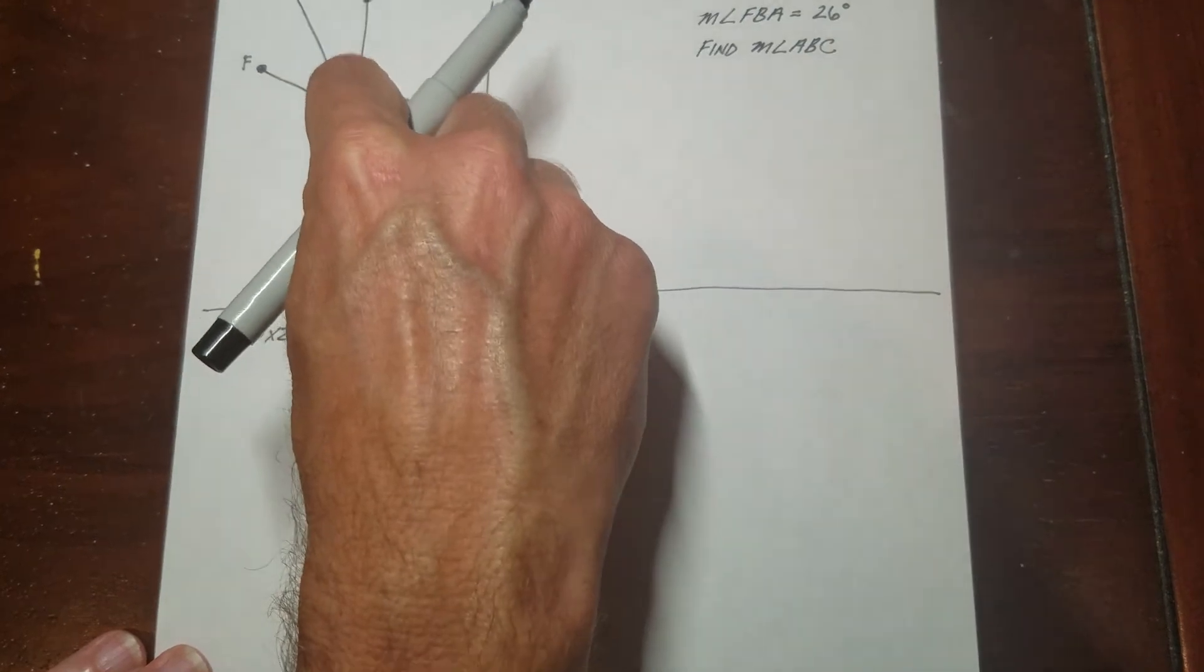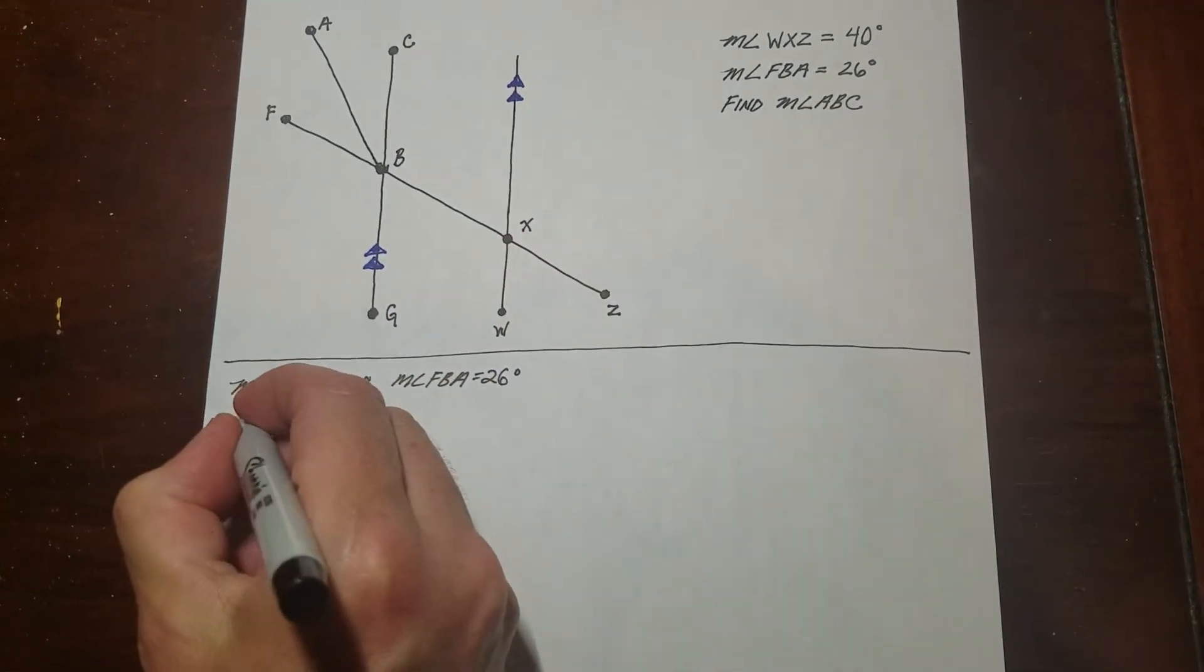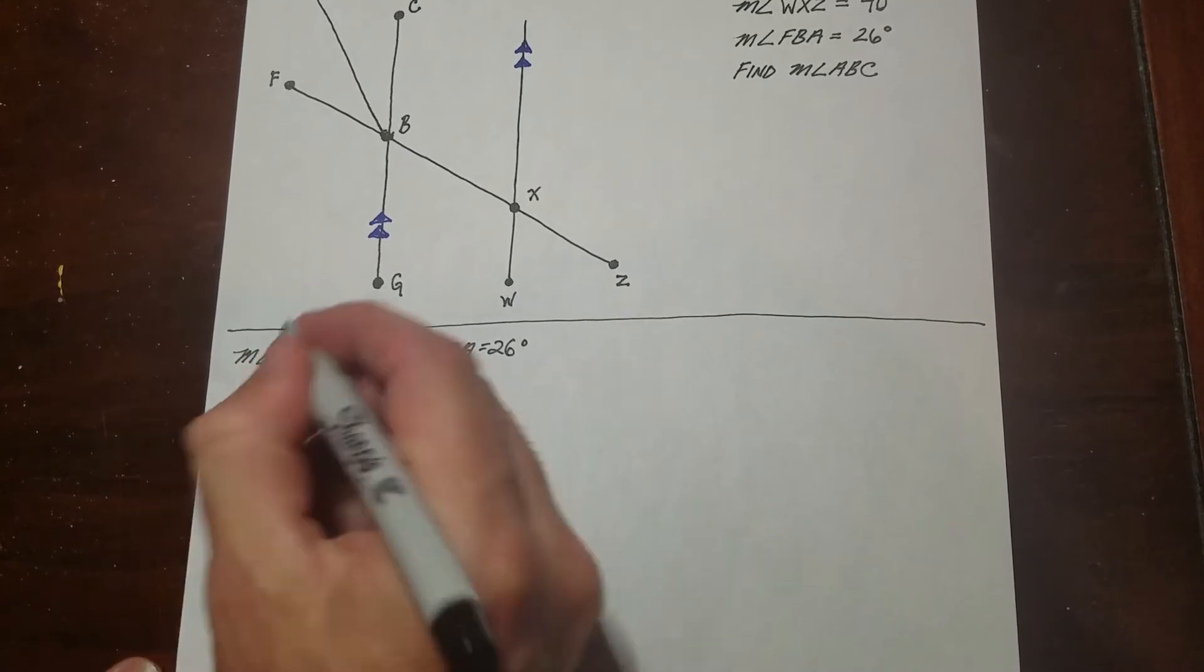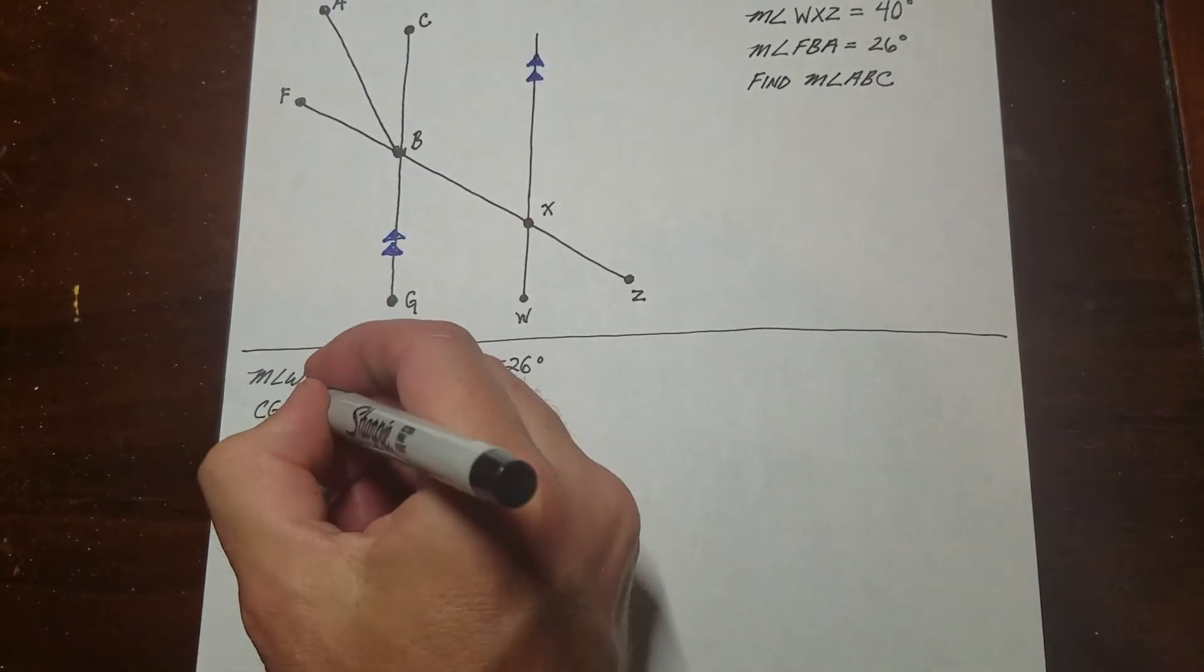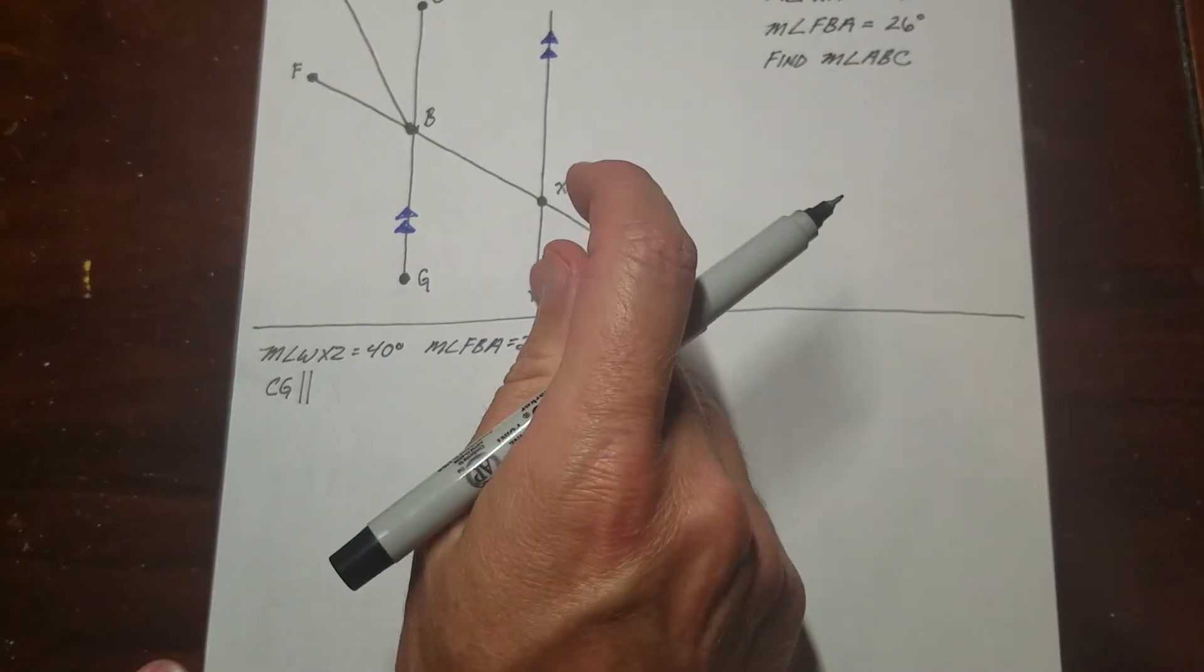I can call this line here CB, I could call it CG. It doesn't matter as long as I talk about where it starts and where it ends. I could also call it BG or BC. It doesn't make any difference. So I'm going to talk about this line right here. What most people will do is grab the endpoints on either end of it. So CG, and you put these two lines like this, that means it's parallel to WX.